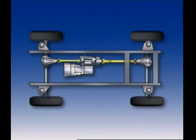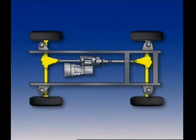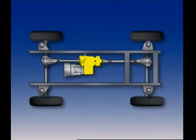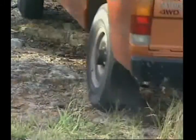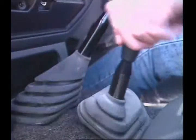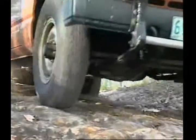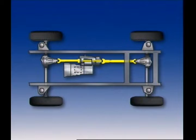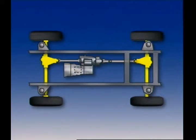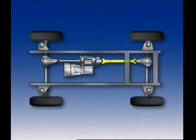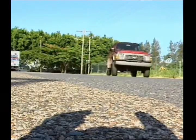A four-wheel drive vehicle has a propeller shaft, a final drive and differential gears, and axles for both the front and rear axle assemblies. A transfer case is attached to the transmission. Part-time four-wheel drive means the vehicle is usually in two-wheel drive and switches to full-time when needed by engaging the transfer case, which locks the propeller shafts together and directs torque through them to both axles. When disengaged, the transfer case is coupled to one propeller shaft only, and most part-time four-wheel drive vehicles drive the rear wheels.